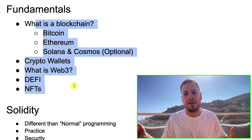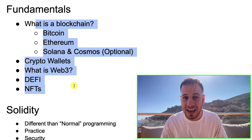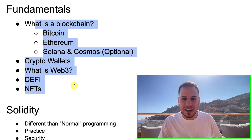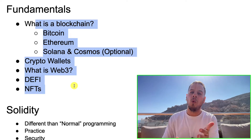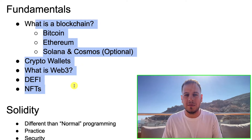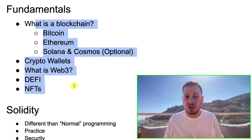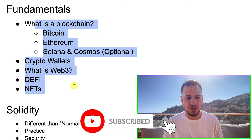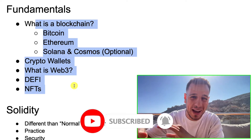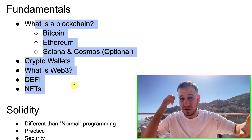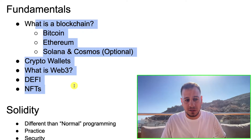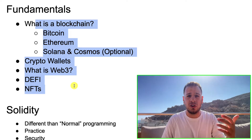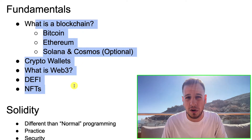Once you deploy a smart contract to the blockchain, it's immutable and you can never change it again. Of course, unless it's an admin-upgradable proxy — there are some workarounds — but by definition, you cannot change smart contracts once you deploy them to the blockchain. You can migrate them to new smart contracts, but we won't cover this in this tutorial.